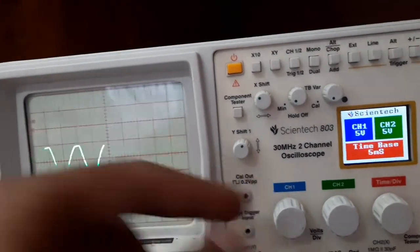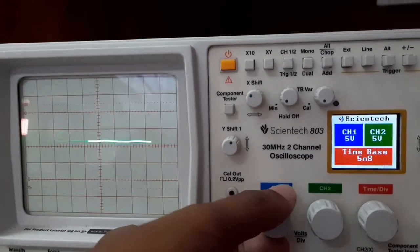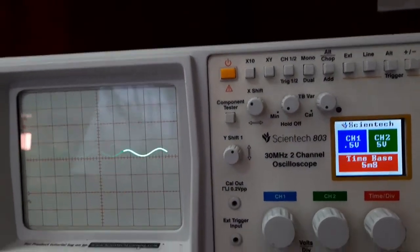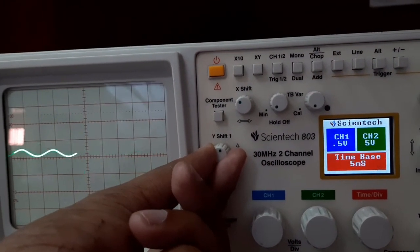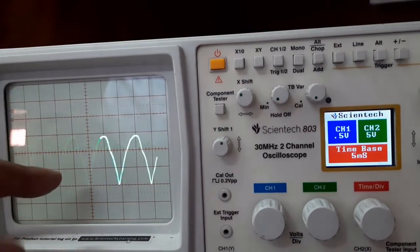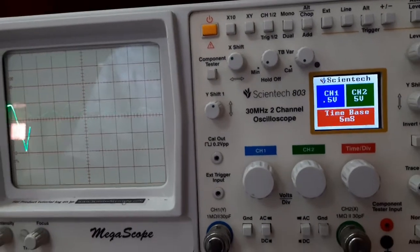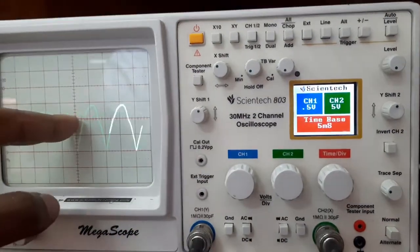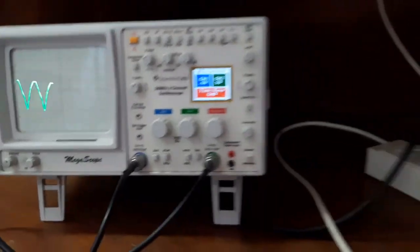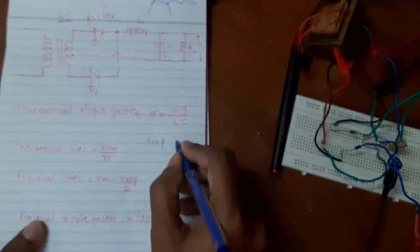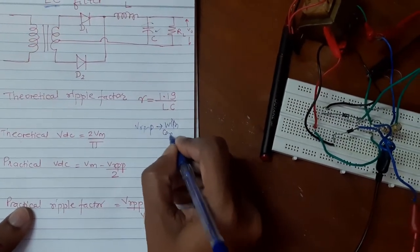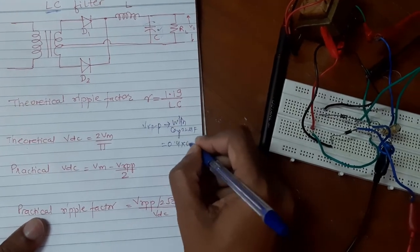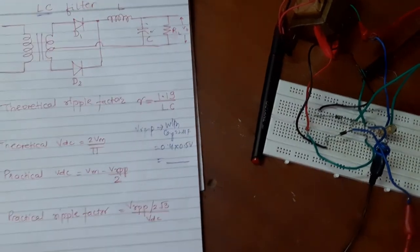To measure Vr peak to peak now, we need to reduce the volts per division on channel 1 so that we can measure the small ripple. The Vr peak to peak with the 22 microfarad capacitor is around 0.4 into 0.5 volts. Make a note of this value.